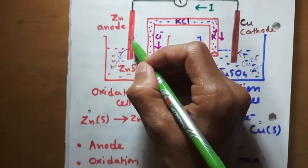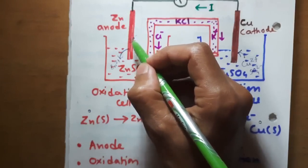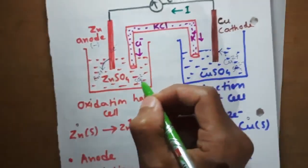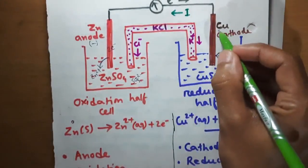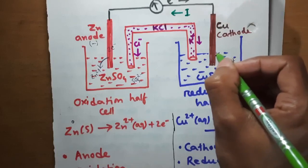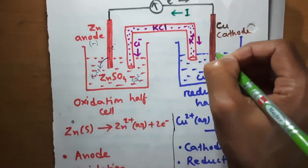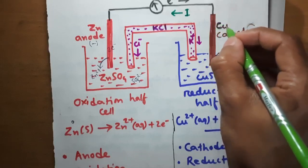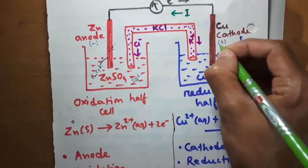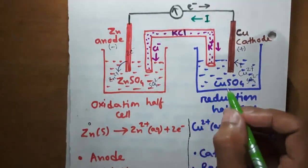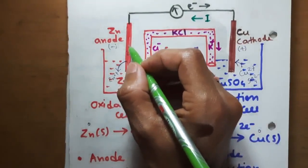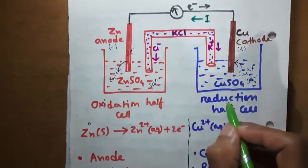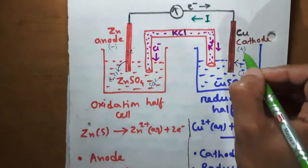When the reaction takes place at the zinc electrode, two electrons are left behind. Since electrons are negatively charged, the anode is negative. At the copper electrode, copper 2 plus ions are deposited as positive ions on the electrode, so the copper electrode — the cathode — is positive. Therefore, in an electrochemical cell, the electrode at which oxidation takes place is the anode and is always negative, and the electrode at which reduction takes place is the cathode and is always positive.